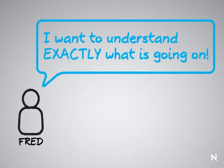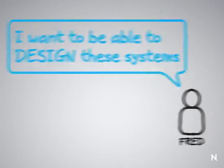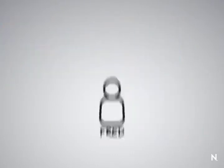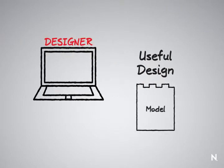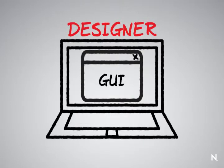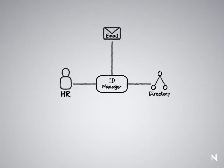But in reality, when we get to things like transparency, we want to be able to understand exactly what's going on. We want to be able to design these systems, and in order to design and really have a useful design, we first have to be able to model that design. That's exactly what we give inside of Designer — a graphical GUI tool where a person can drag and drop new systems on board, whether they're traditional directories, email, or HR applications.